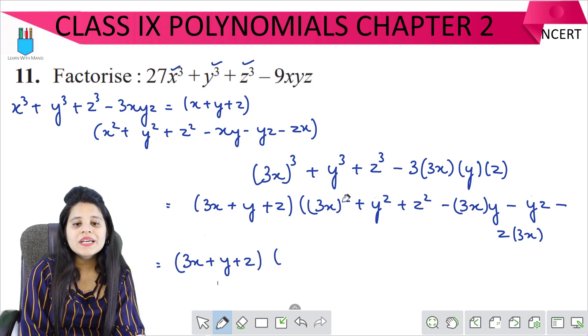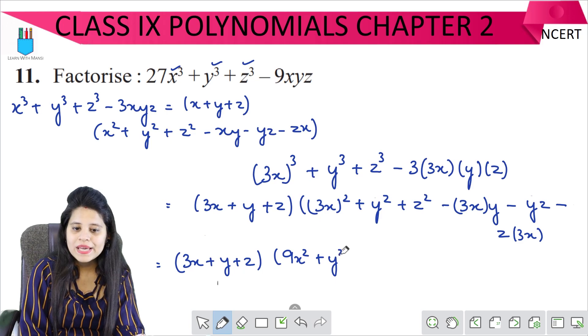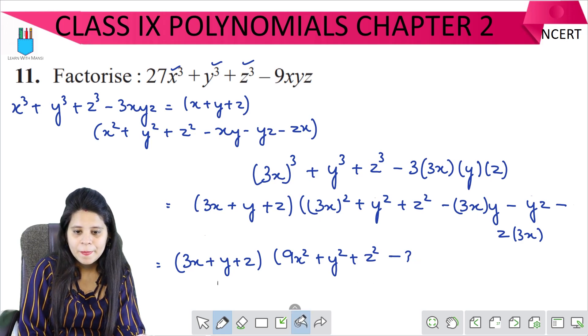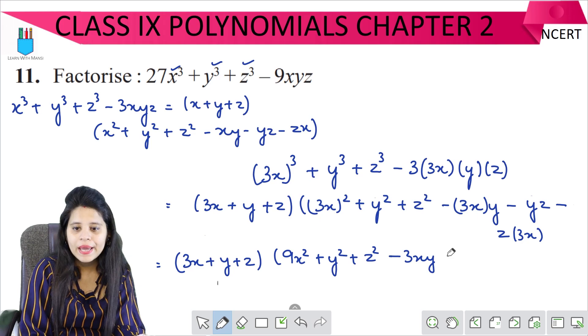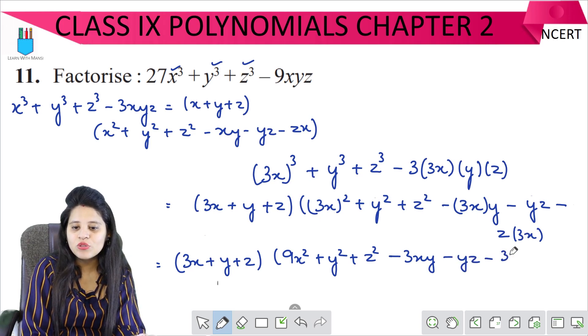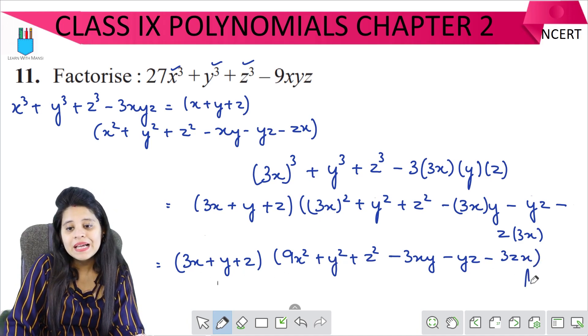Here 3 square, 9, it means 9x square. Plus y square. Plus z square. Minus 3. Let's write this. Minus 3xy. Minus yz. And minus again 3zx. So this will be our answer.